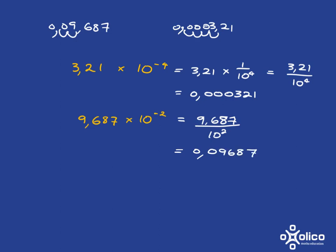So you can see, for example, here that this number is a lot smaller than this number because here you're dividing by 10 to the power of 4, which is a really big number, whereas here you're dividing only by 10 squared, which is just dividing by 100.